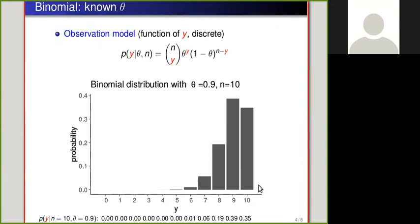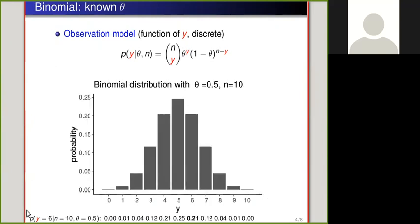After we have the observation model, we have the question: what if we then actually observe something? Let's say we observe y equals 6. In that case, we can see that given theta is 0.5, probability of observing 6 is 0.21.